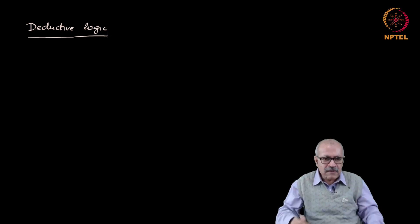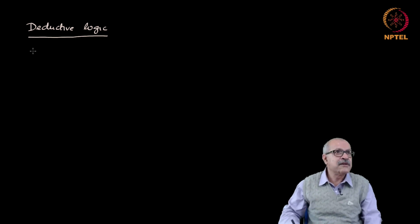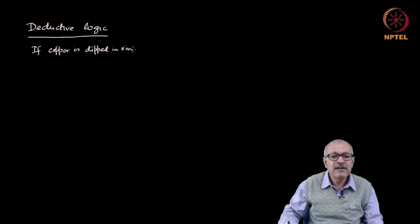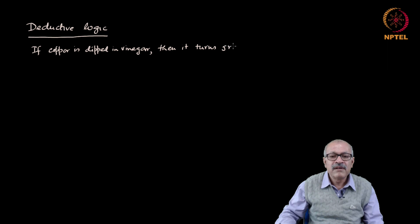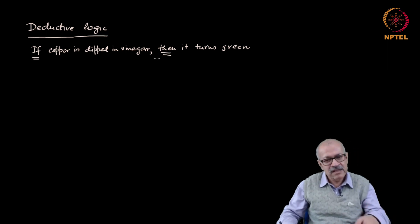Let us take the situation of this particular inductive inference: if copper is dipped in vinegar, then it turns green. Notice the structure — if, then. If something happens, then something else happens. That is the structure.